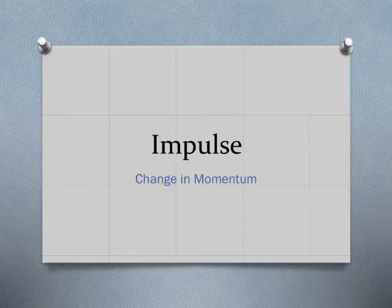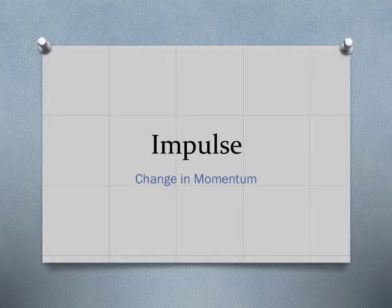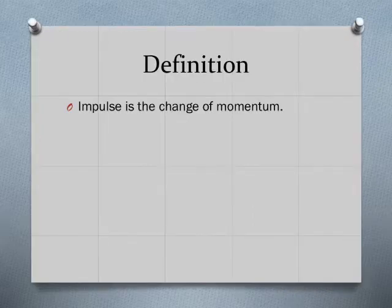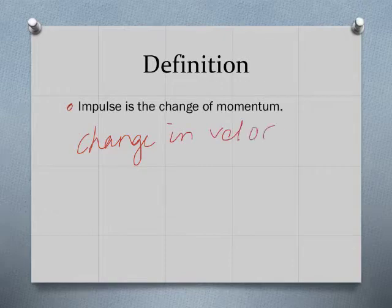Whenever I teach momentum, a very closely related idea to discuss is impulse — not an impulse like a reaction from a person, but a change in momentum. Impulse changes momentum. The definition of impulse is literally a change in momentum. Most commonly, the change in momentum is caused by a change in velocity. Most of the time an object's mass stays the same; it speeds up or slows down — if velocity decreases, momentum decreases; if velocity increases, momentum increases.